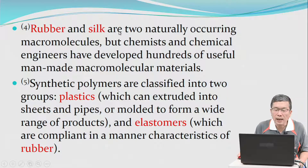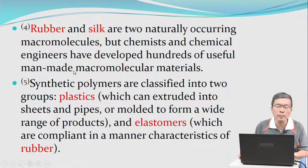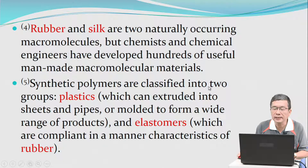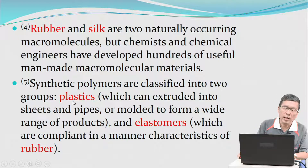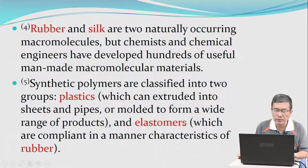Rubber and silk are two naturally occurring macromolecules, but chemists and chemical engineers have developed hundreds of useful polymers. Polymers are classified into two groups: plastics, which can be extruded into sheets and pipes or molded to form a wide range of products, and elastomers, which can behave in a manner characteristic of rubber.